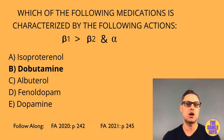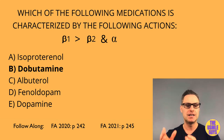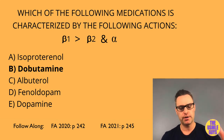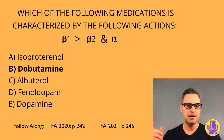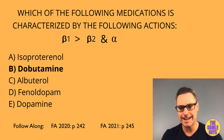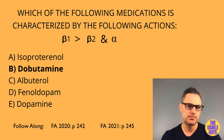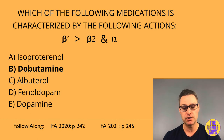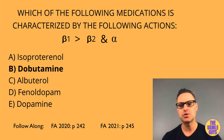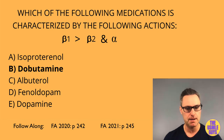Dopamine has equal effects on D1 and D2 receptors, more so than beta receptors, then lastly alpha — so D1=D2 > beta > alpha. At high doses, dopamine increases blood pressure, heart rate, and cardiac output, and can be used in unstable bradycardia, shock, and heart failure. At lower doses, beta stimulation produces chronotropic and inotropic effects, but at higher doses, alpha receptor stimulation causes vasoconstriction.